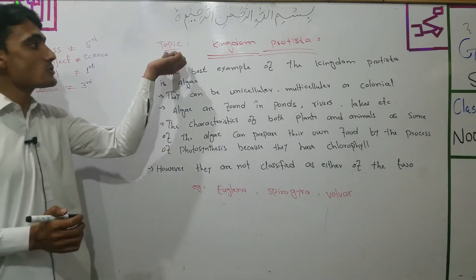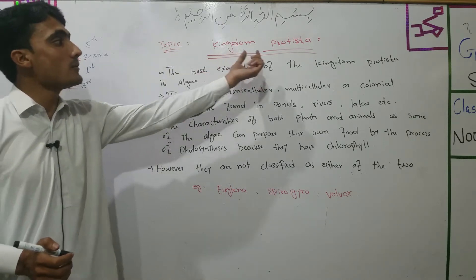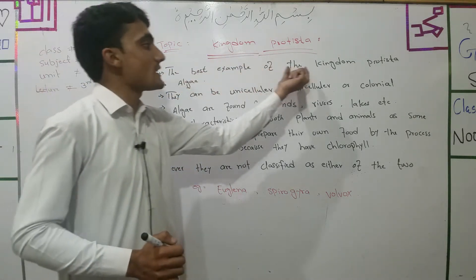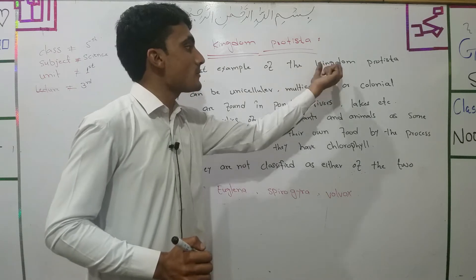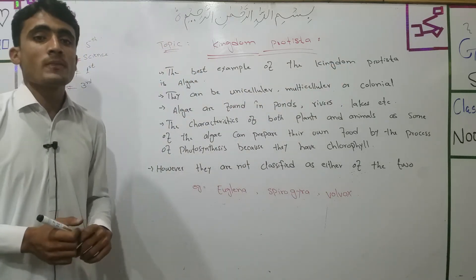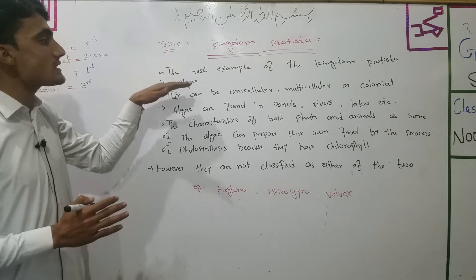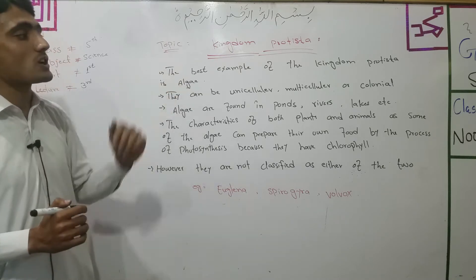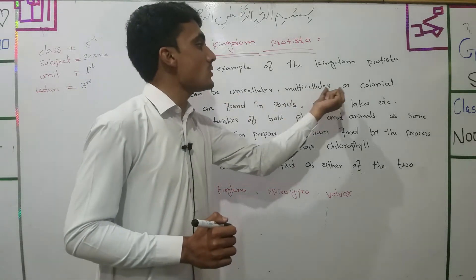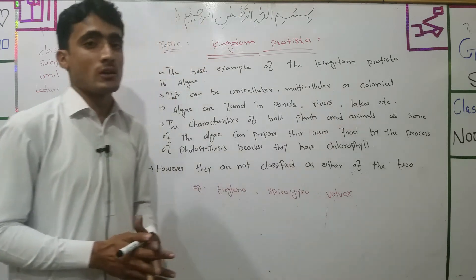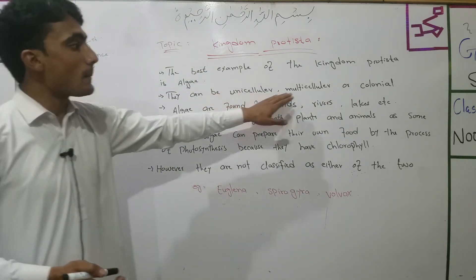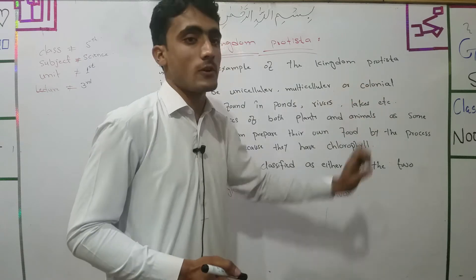The second kingdom is Kingdom Protista. The best example of Kingdom Protista is algae. They can be unicellular, multicellular, or colonial — that is the unicellular form, the multicellular form, and the colonial form.